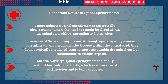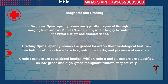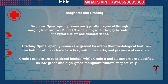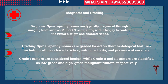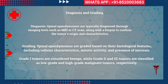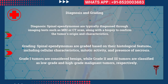Spinal ependymomas are typically diagnosed through imaging tests such as MRI or CT scan, but biopsy and microscopic examination are compulsory to confirm the tumor's origin and characteristics. Microscopic examination of the tumor excised during surgery is the gold standard for confirmation and diagnosis. Before surgery, the MRI scan is the primary imaging tool used.